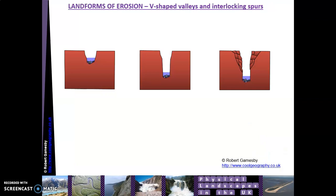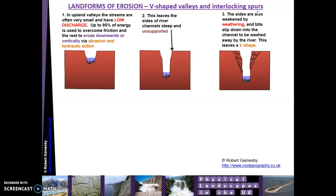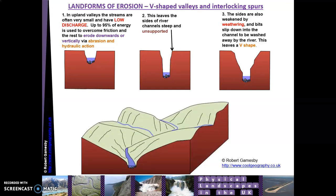Another feature found in the upper course is V-shaped valleys, which are quite easy to understand. As the river vertically erodes — digging downwards — you start to get really steep, sheer valley sides, as shown in the middle diagram. Over time, because the sides are very steep they're vulnerable to erosion and weathering. As they weather, cracks form and eventually those sides collapse into the river, forming the V-shaped valley.